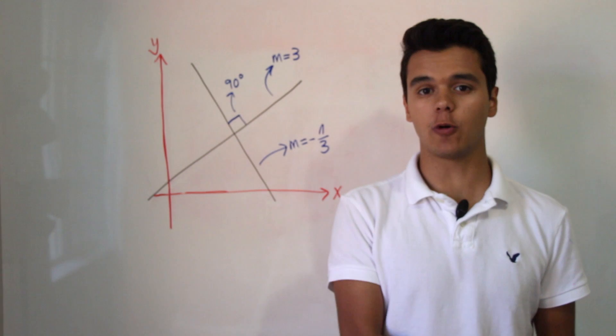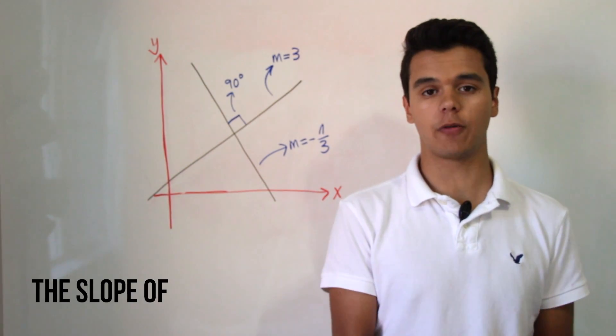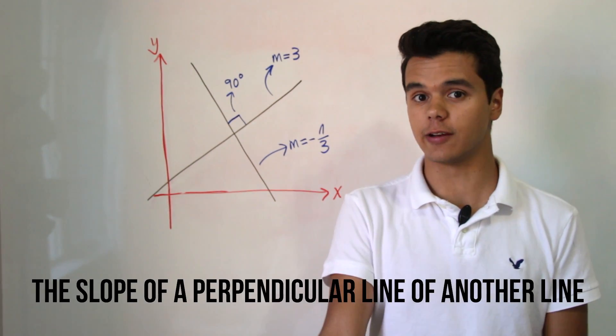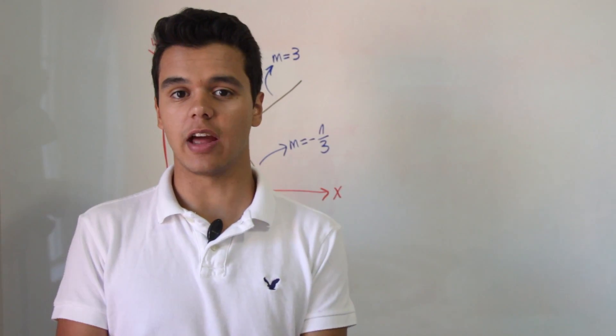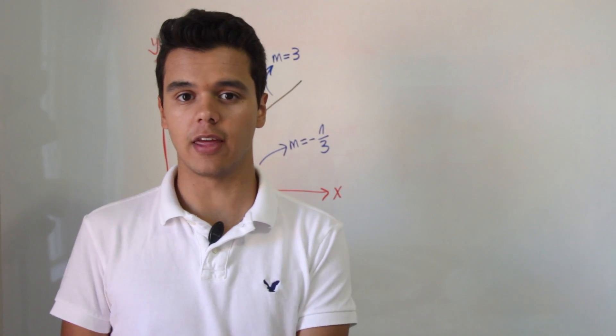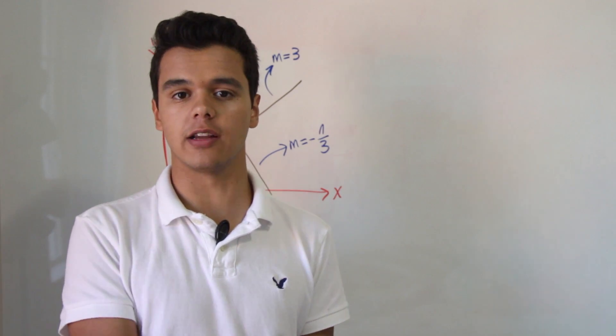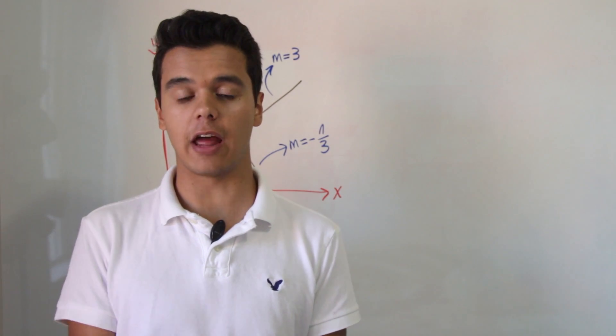Luckily for us there is a special rule that helps us find the slope of a perpendicular line of another line. And that rule says that if we know the slope of a line, then the slope of its perpendicular line is going to be the negative reciprocal of that number.